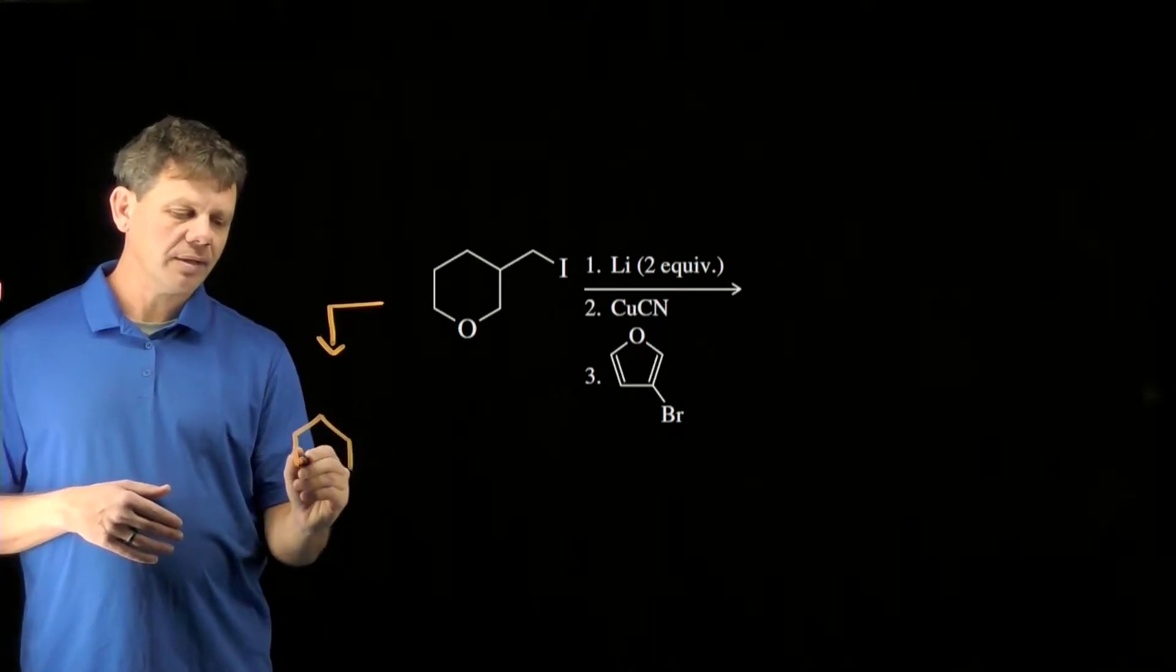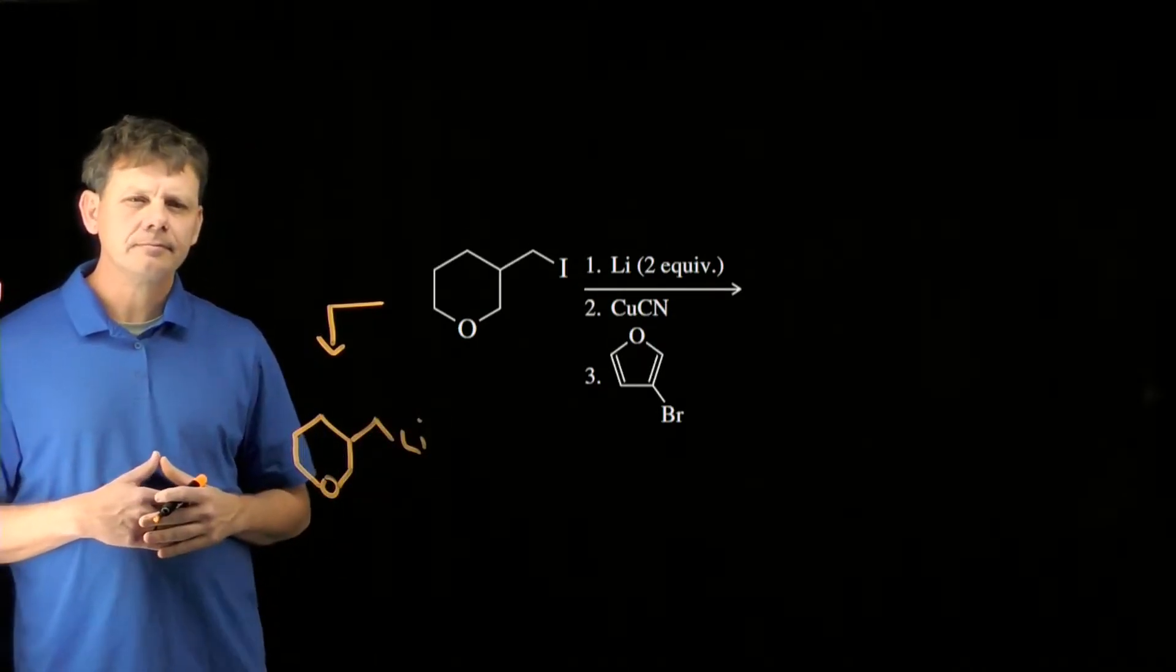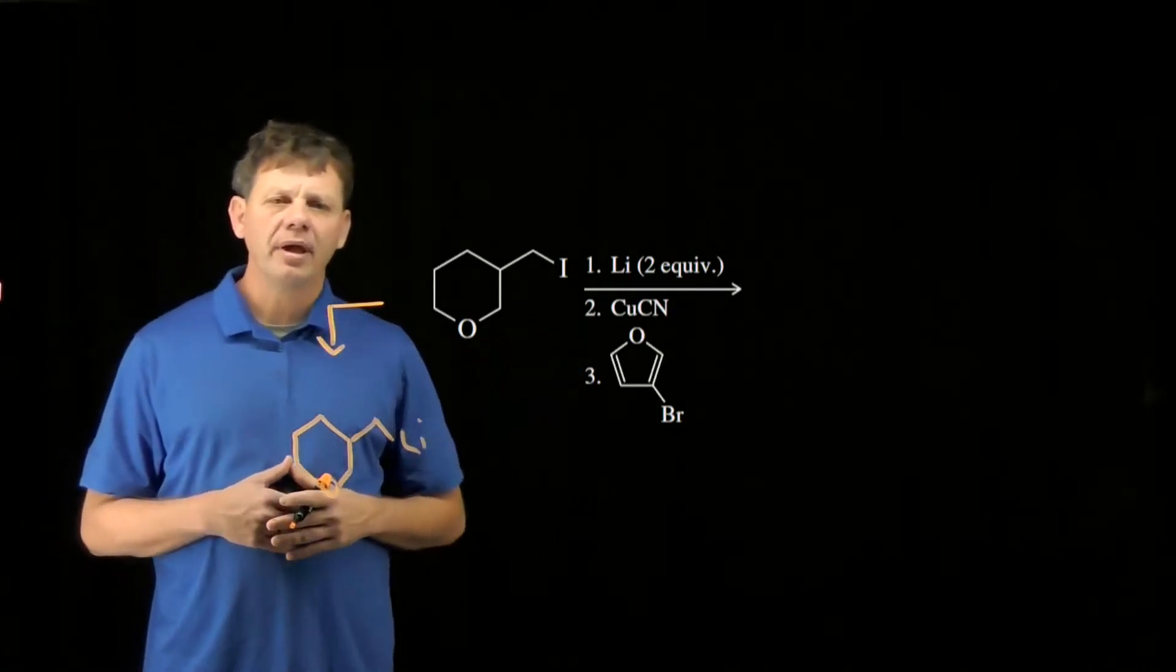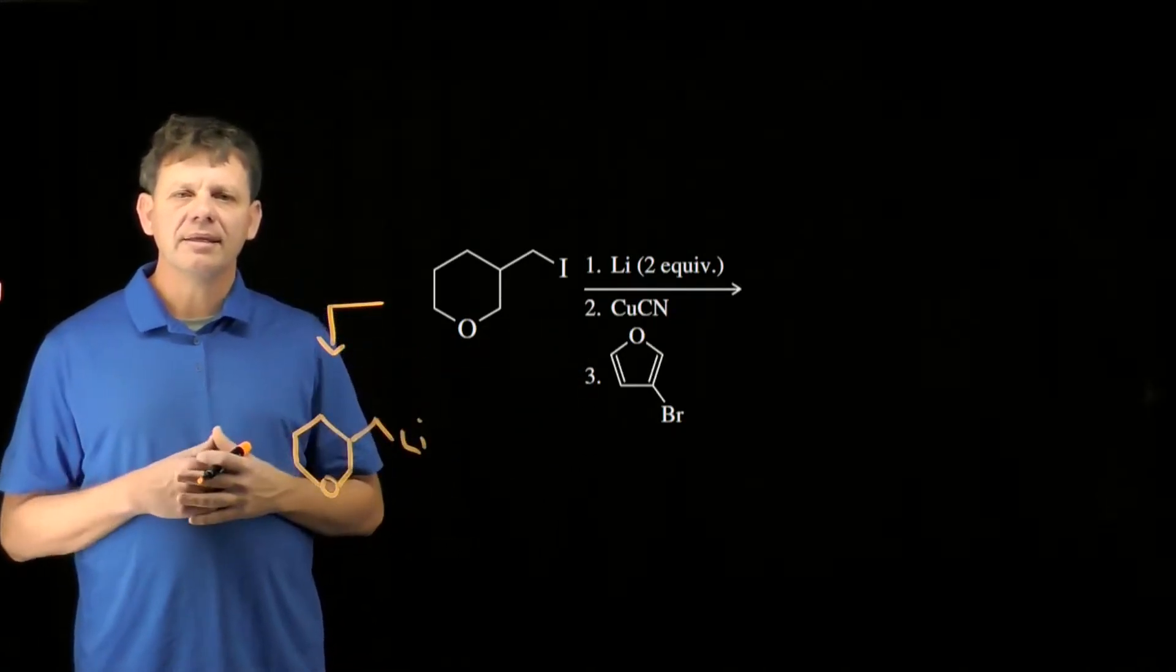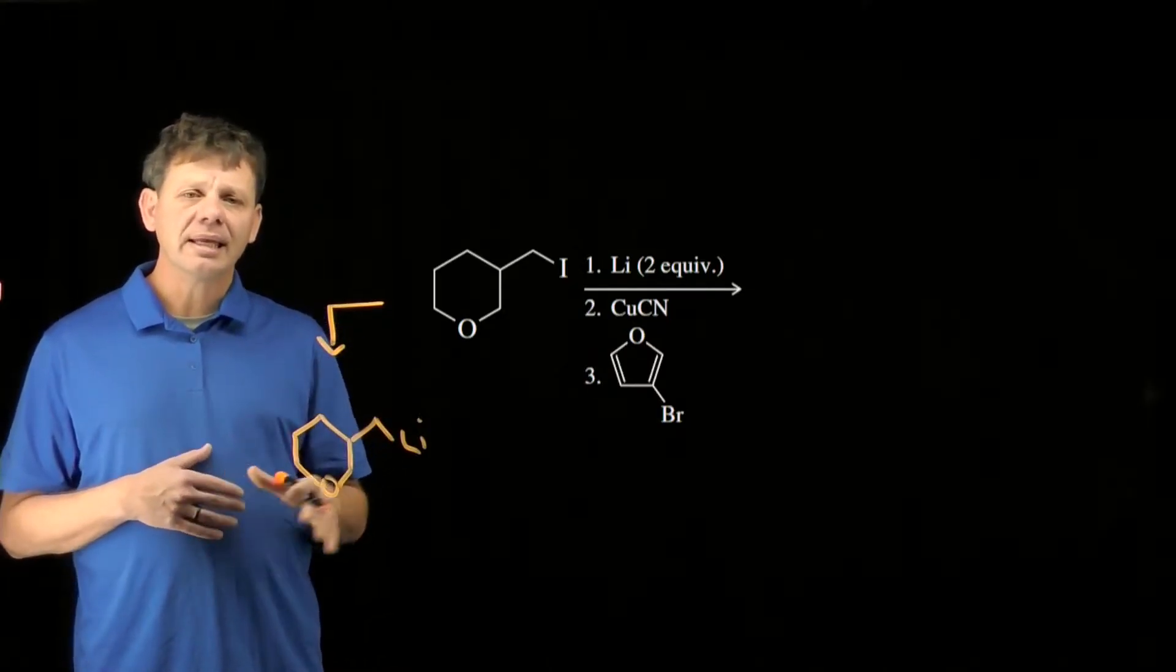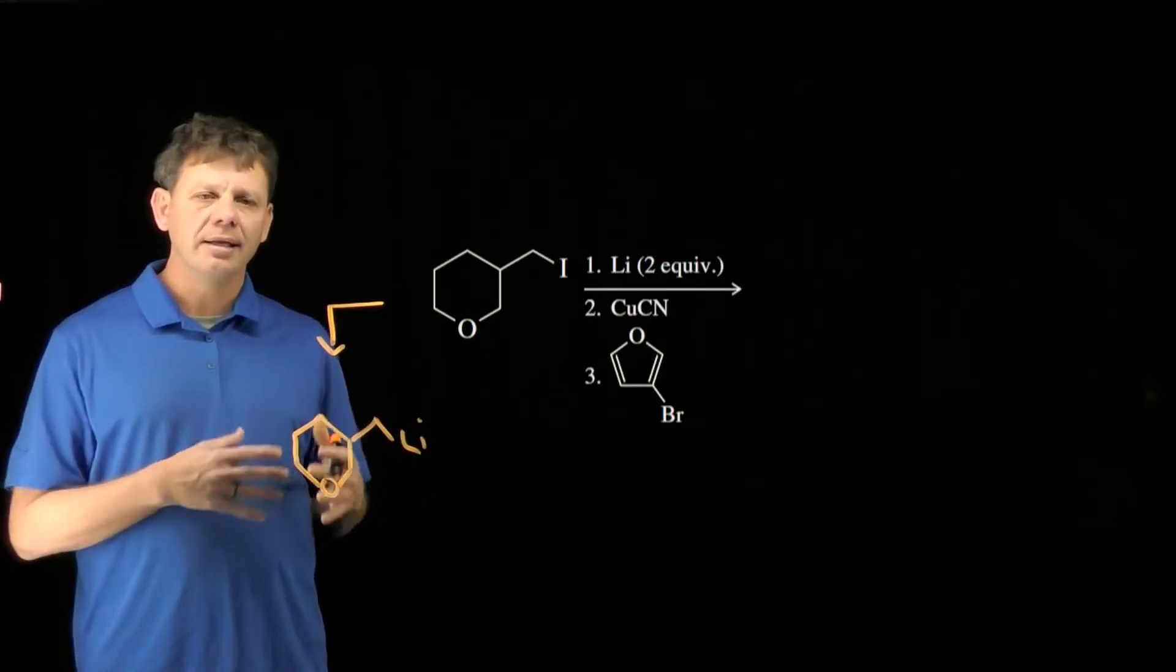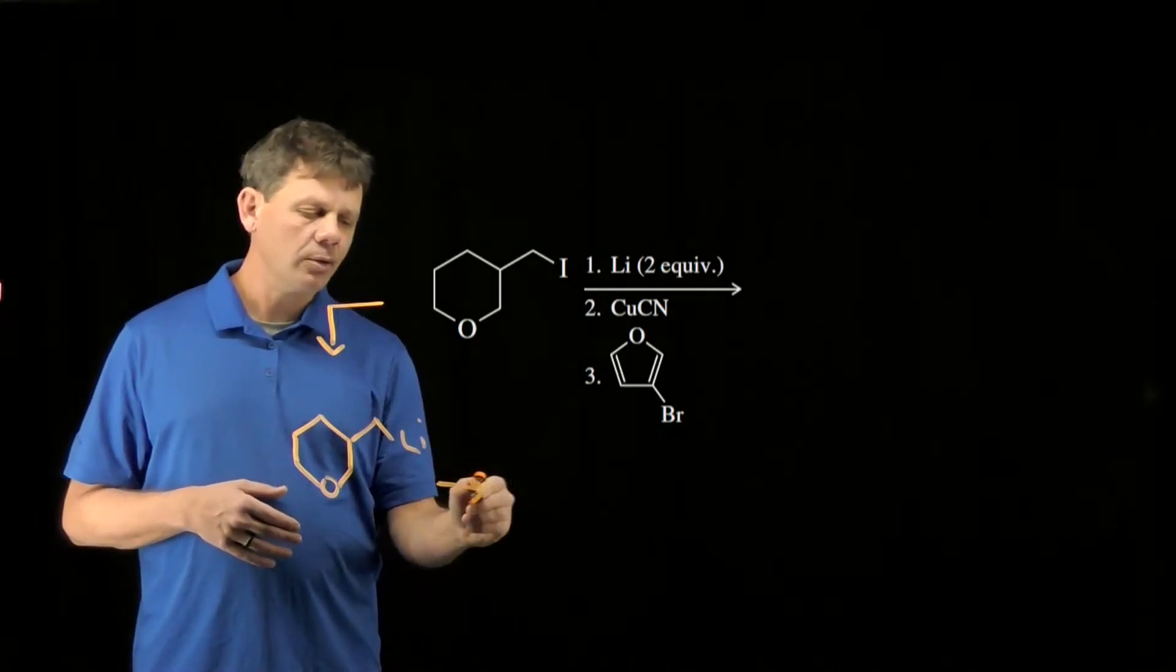And so that organolithium reagent is shown here. Now this organolithium reagent we're going to react with copper cyanide to make the diorganocuprate. The cyanide is a non-transferable ligand which allows us to only use one equivalent of our alkyl iodide to make the diorganocuprate.